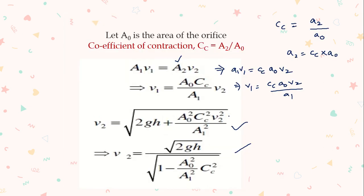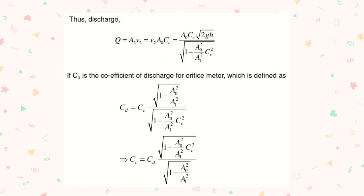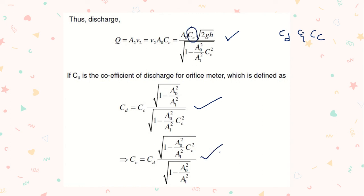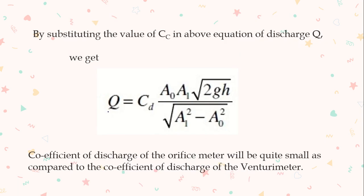Discharge Q = A2·V2. Substituting the value of V2, we get Q in terms of A0, Cc, A1, g, and H. However, in this expression we have Cc and Cc² terms. Since we normally express discharge using the coefficient of discharge Cd, we derive the relationship between Cd and Cc, then substitute Cc in terms of Cd. After substituting and simplifying, the actual discharge becomes: Q_actual = Cd × (A0·A1 / √(A1² − A0²)) × √(2gH).